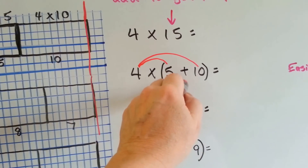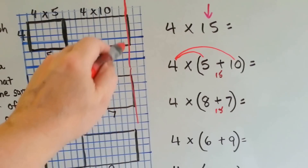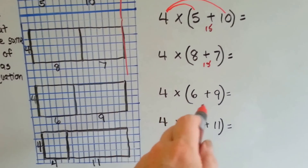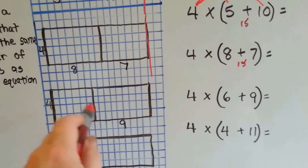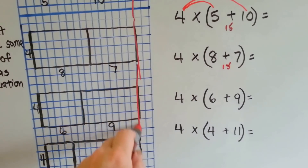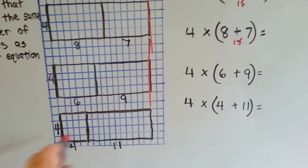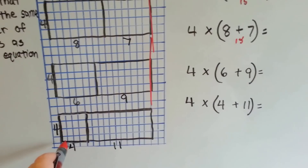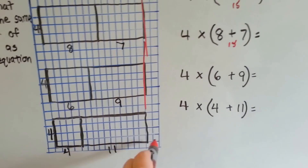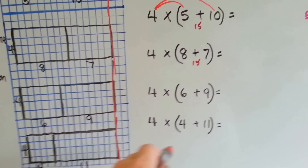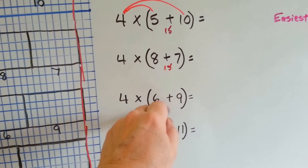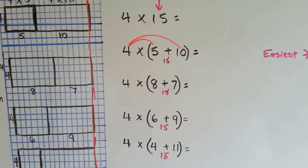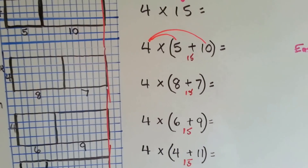That's 15. That's 15. So they're going to end at the same place. And if we did 4 times 6 plus 9, here's 6 boxes, here's 9 boxes, and it's ending in the same place. And if we did 4 and 11, which equals 15, we'd have our 4 coming down and then the 4 and then the 11 — they all equal 15. So they're all going to end at the same place and they're all going to have the same answer. The question is, which one's easiest to multiply?